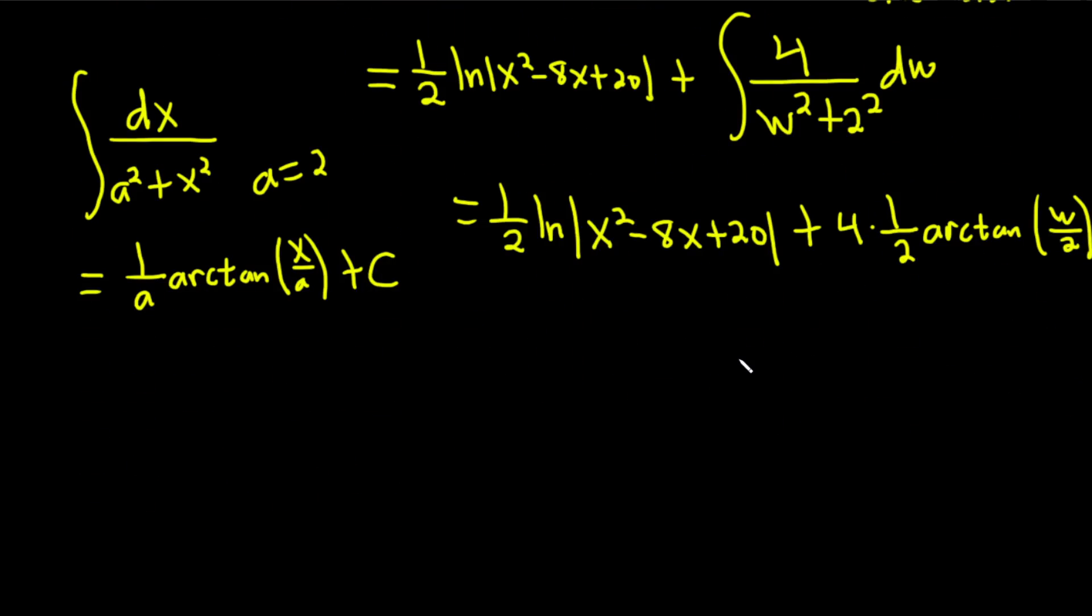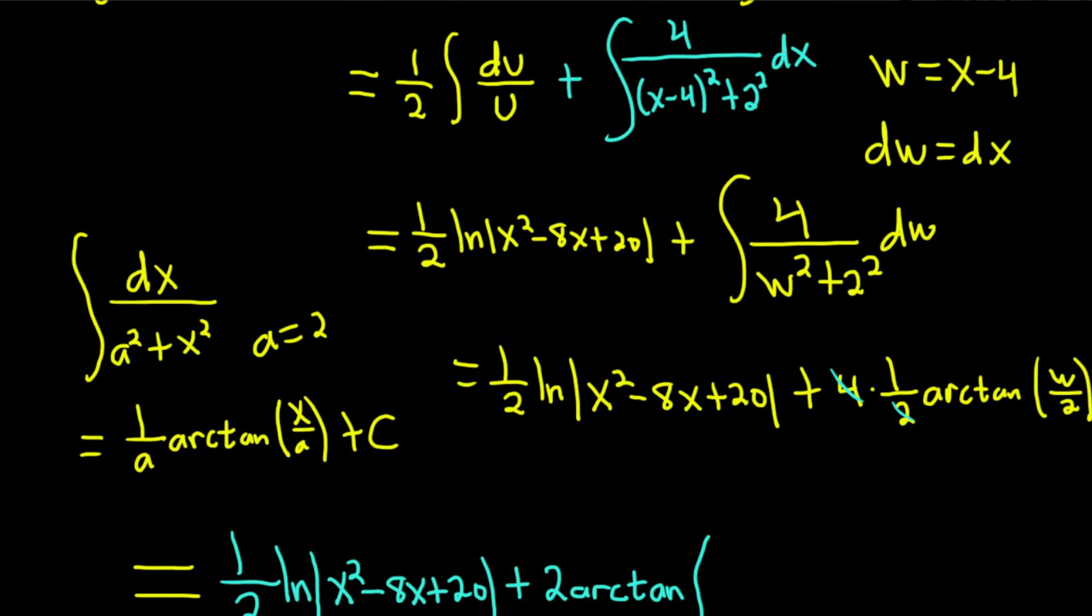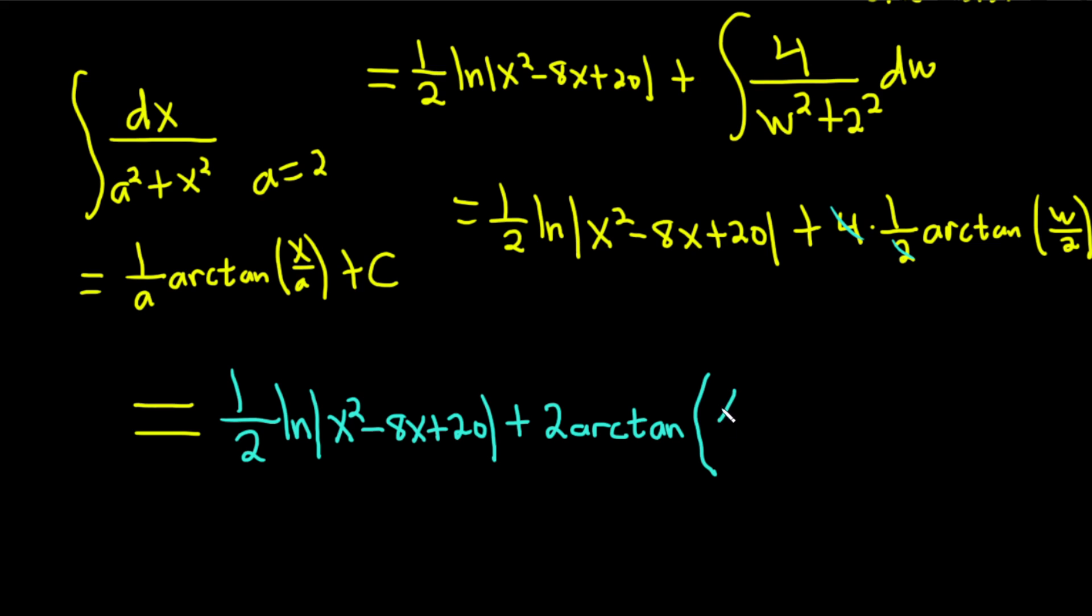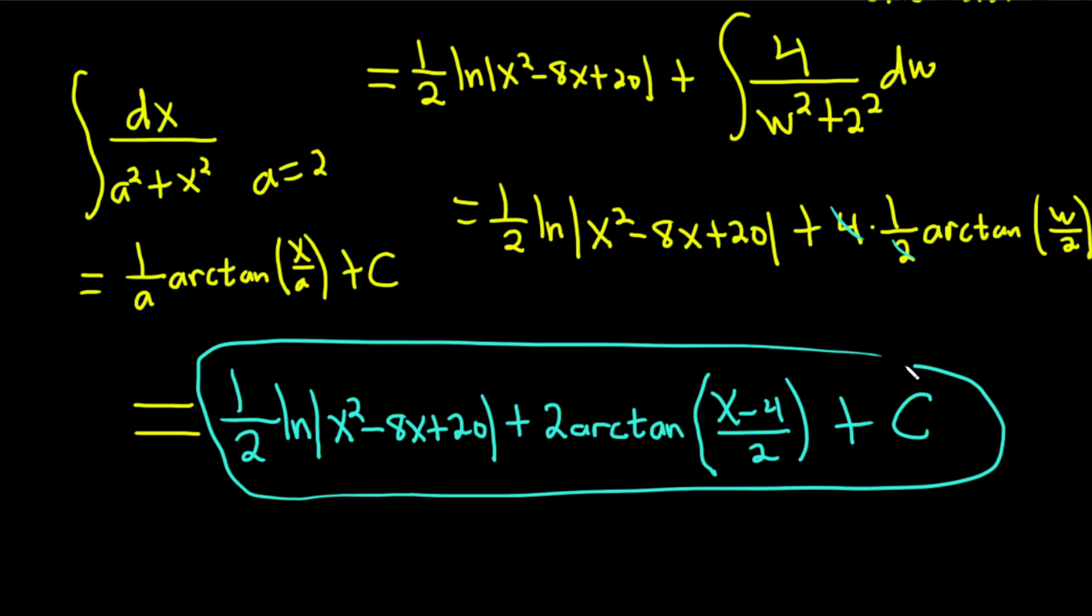So continuing, we have that this is equal to 1 half natural log absolute value x squared minus 8x plus 20. And then the 4 and the 1 half become a 2. So you get plus 2 arc tangent, and then you have w over 2. But w, we know something about w. w was x minus 4. And then it's over 2 plus our constant of integration, capital C. Yeah, that's it. That's the answer. Hopefully this has been helpful to someone out there who is trying to learn some calculus. Good luck. Thank you.